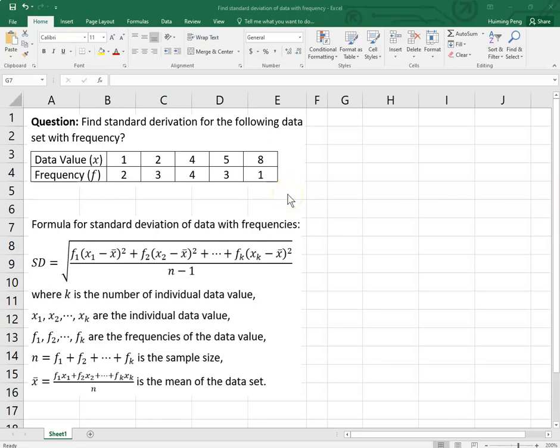So we have to use a formula. Here's the formula. Standard deviation equals... so this is the sample. What does it mean? Well, k, here, is the number of individual data values. How many? In our example, 5, because we have 5 different data values: 1, 2, 4, 5, 8. So k is 5.